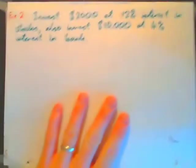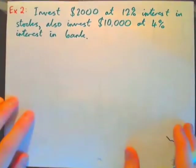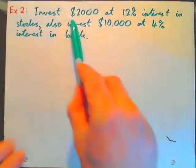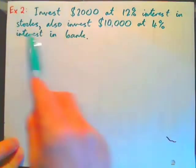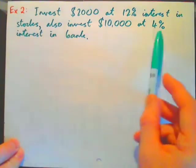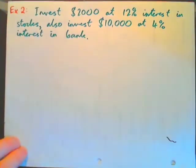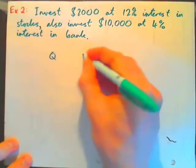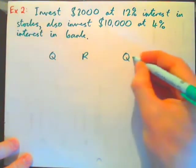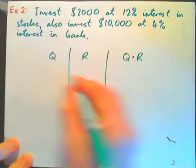Now Example 2, build a quantity-rate table for this. We're going to invest $2,000 at 12% interest in stocks, then invest $10,000 at 4% interest in the bank. So quantity-rate table, we just do this. First, build it.